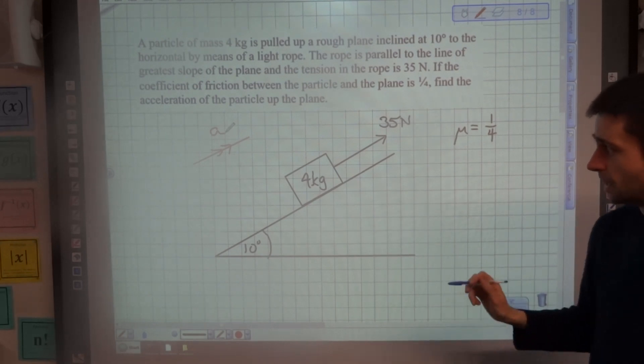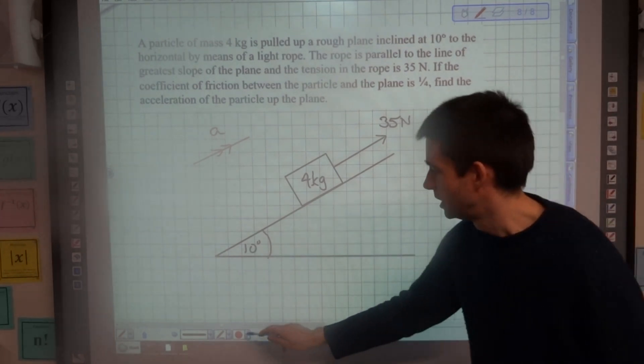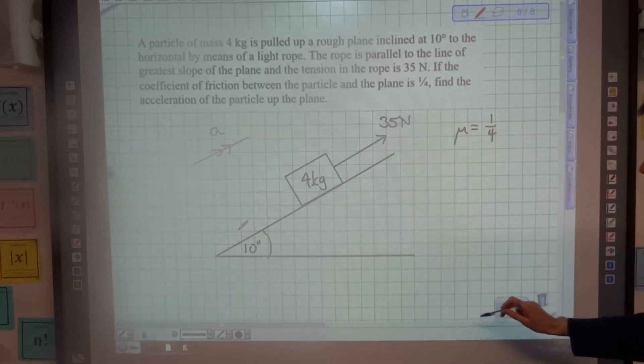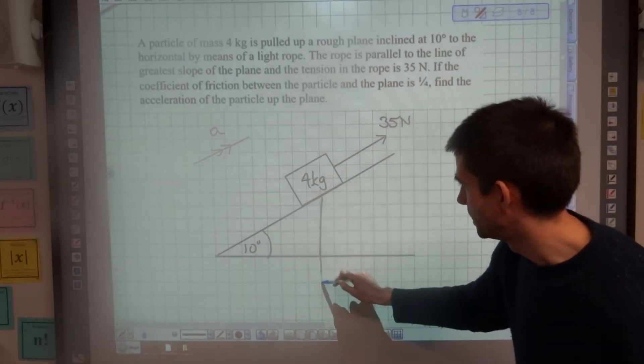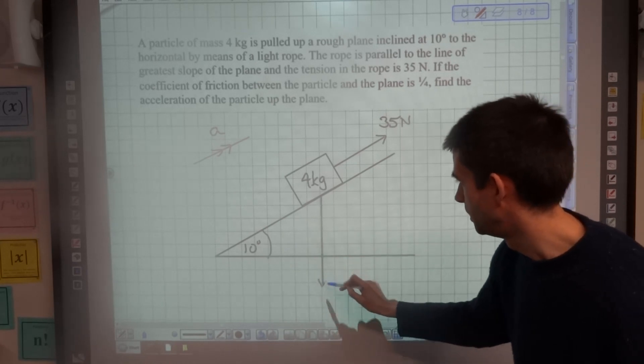Right, so let's think about the forces that are acting on this particle, in addition to that 35 Newtons we've already got labeled. We've got its weight going down, which is going to be 4G.